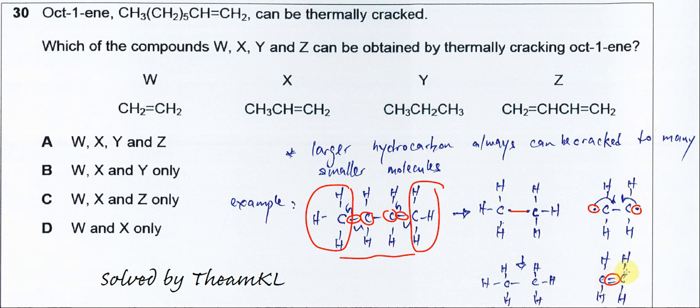So this is the example for cracking. When a larger hydrocarbon undergoes thermal cracking, it can always form smaller hydrocarbons. That's why the answer is A.